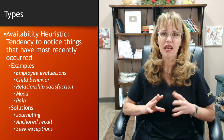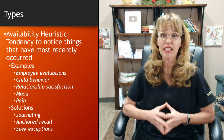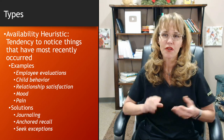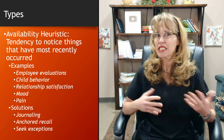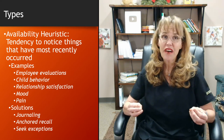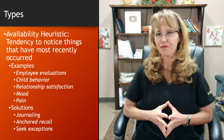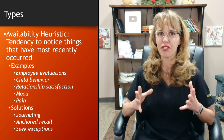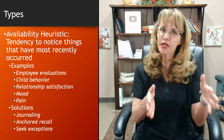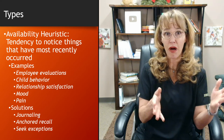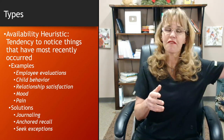There are several types of availability biases. The first one is the availability heuristic — the tendency to notice things that have most recently occurred. A perfect example of when the availability heuristic often comes into play is employee evaluations.